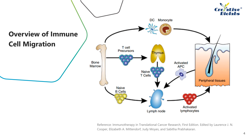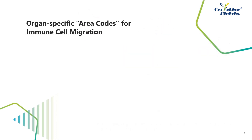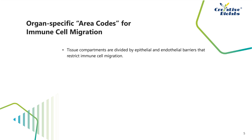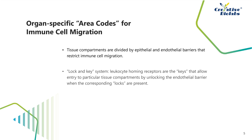The complex movements and interactions of leukocytes throughout the organs of the body require exquisite regulation. Since tissue compartments are divided by epithelial and endothelial barriers which restrict immune cell migration, a lock-and-key system is required for the migration of immune cells between these barriers, where homing receptors are the keys to unlocking the corresponding locks.